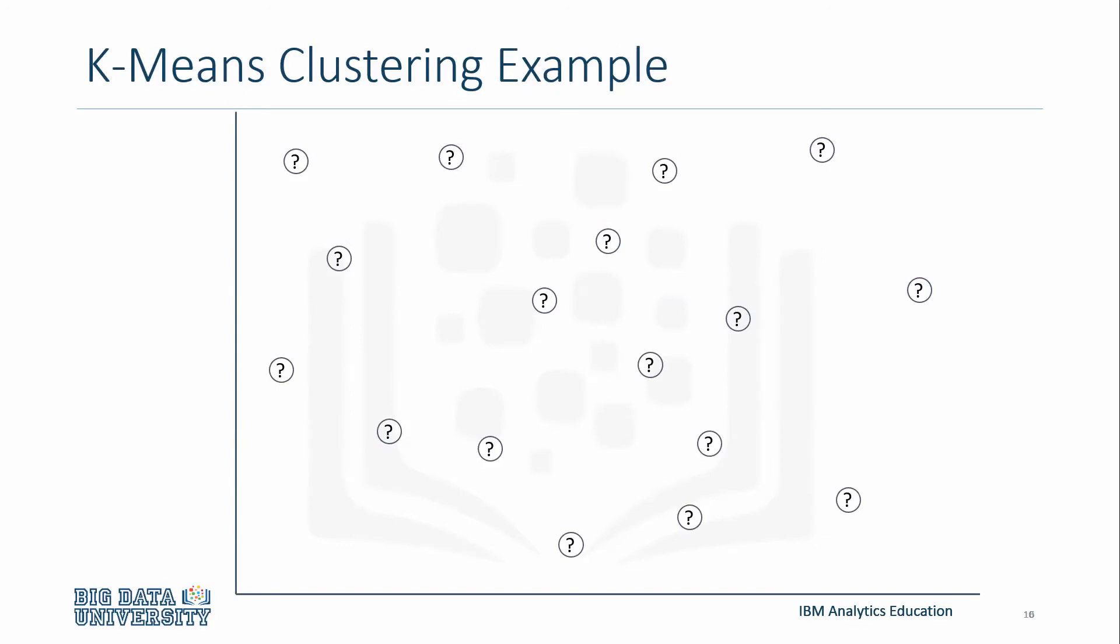For simplicity, this example will be looking at k equals 2. In other words, the algorithm will be creating two clusters. One cluster will be blue, while the other will be green. So, these are the unlabeled data points in 2D space.